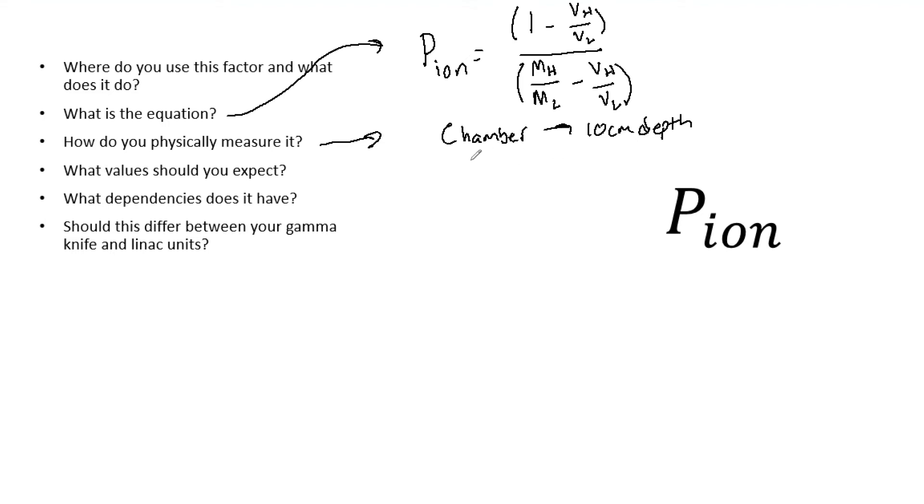First take a measurement and this is going to be M raw plus. Typically, now it does depend on your clinic, but typically this is at 300 volts. I've only known it to be 300 volts, but not to say your clinic couldn't do something different. So your high voltage, your VH here, is 300.